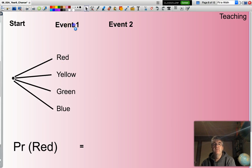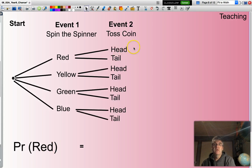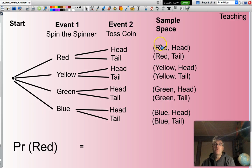What about if I was looking at the probability of only spinning a red? Well, here, over here, are all eight outcomes.